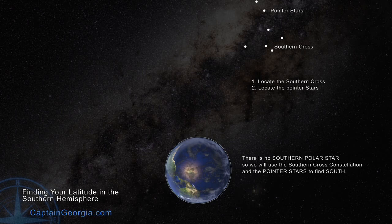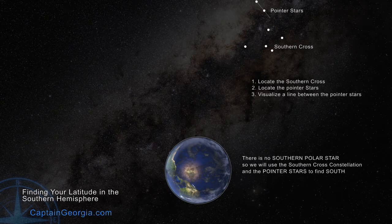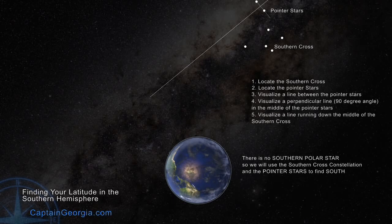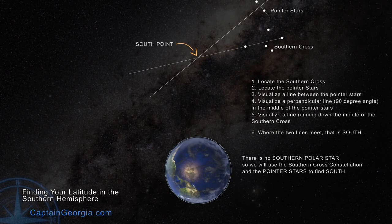The Southern Cross and the pointer stars do move around the globe, so you may find them in different positions, but the process still works. Find the pointer stars, draw a line between them. In the center between the two pointer stars, draw a line from the center of those two, perpendicular down to a visualization point. Repeat the process with the Southern Cross, find the two stars, draw a line, and where those two lines intersect, that's south — and this works anywhere in the Southern Hemisphere.